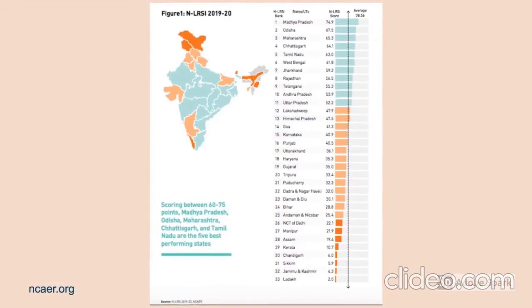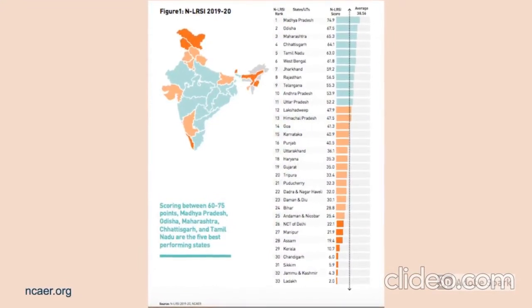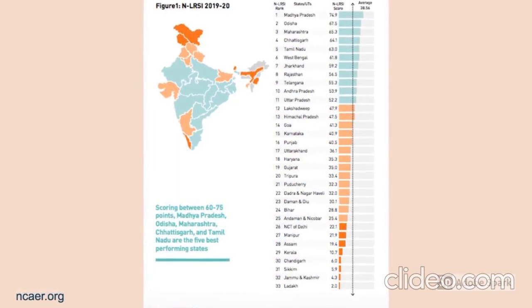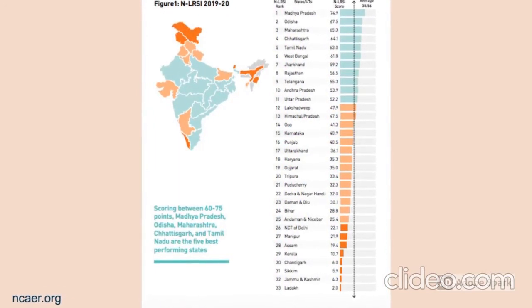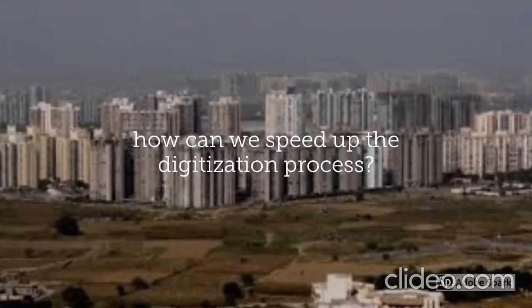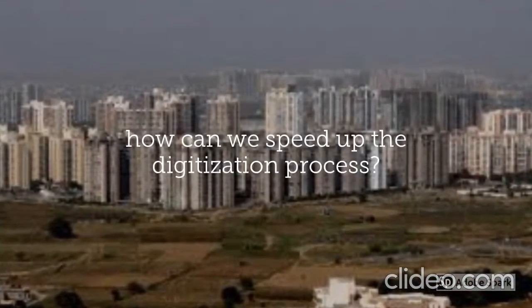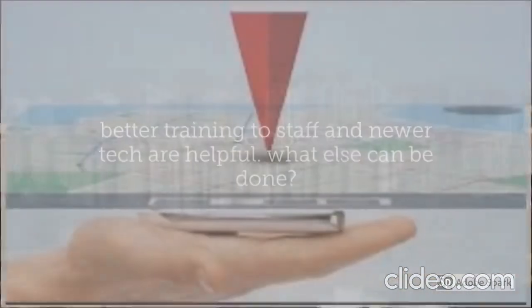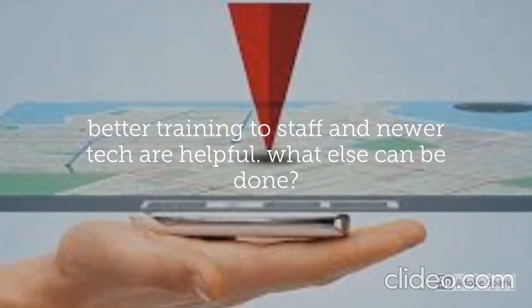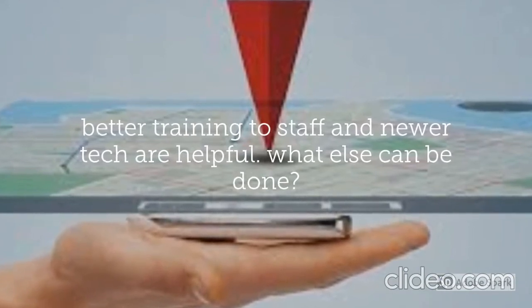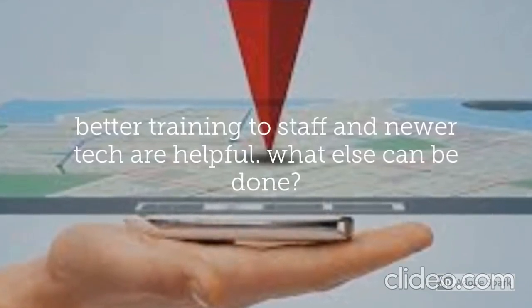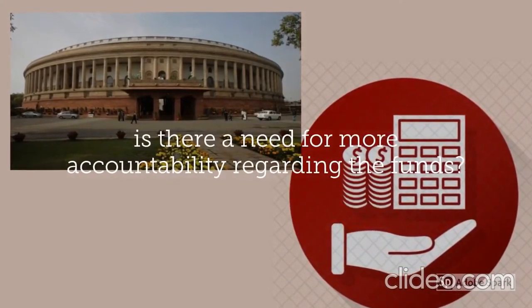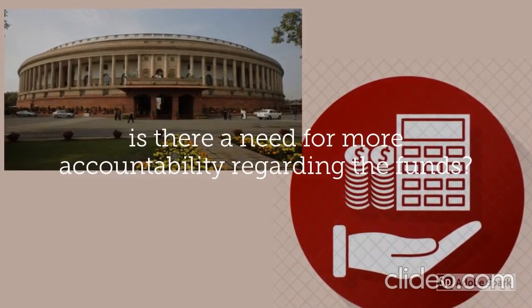All of this points to the fact that while there are significant achievements in the field of digitizing land records, the ultimate achievement of conclusive titling is still a long way away. What steps are needed to speed up this process and simplify the troubles of landowners in India? While better trained staff and newer technology are definitely a way out, do you think there are other ways to go about this? Is there a need for more accountability with respect to the funds? Let us know your thoughts in the comments below.